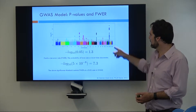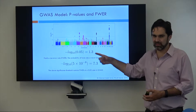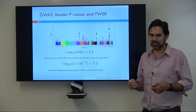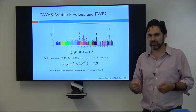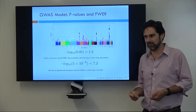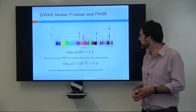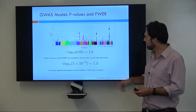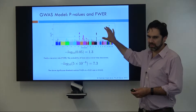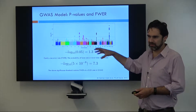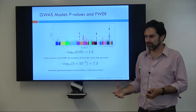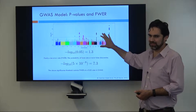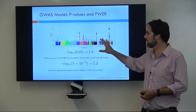It could be that all of these variants are in high LD with each other. And if they're in LD, it means they're going to have similar estimated effects and similar p-values. And so we don't actually know which variant in here is the causal variant or the risk variant. We just know that something in here is associated with the phenotype.